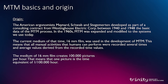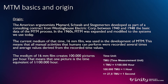The medium at that time was 16mm film — no computers or modern tools were available. The 16mm film creates 100,000 pictures per hour, meaning one picture is the time equivalent of one part of 100,000 parts in one hour. The smallest time unit is 1 TMU — Time Measurement Unit — and if you convert that, you get 27.8 TMU for one second.